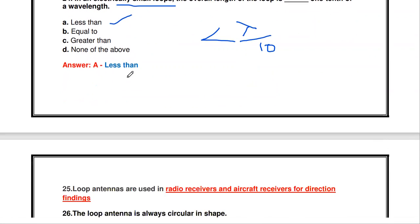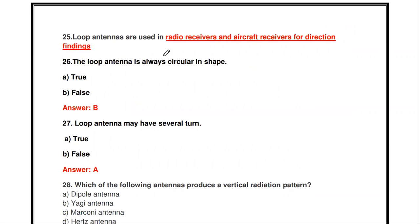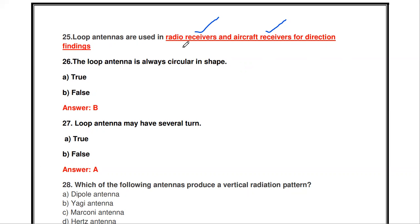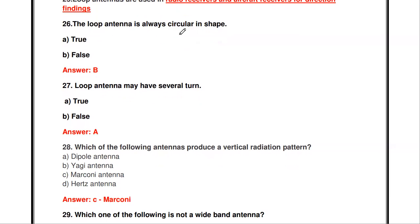Loop antennas are used in radio receivers as well as aircraft receivers for direction finding. These are the main applications of the loop antenna.